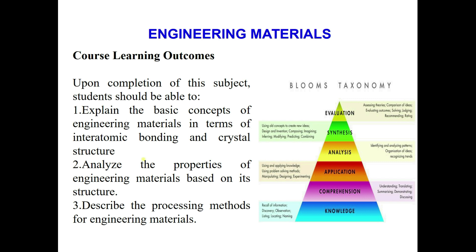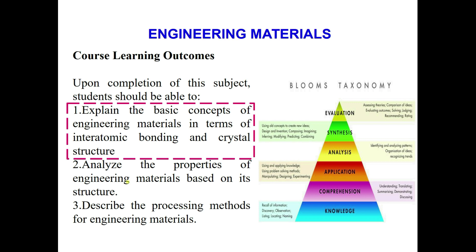What is the purpose of studying the Engineering Materials course? This course has three different CLOs or course learning outcomes. For this particular chapter, the CLO is explaining the basic concept of engineering materials in terms of inter-atomic bonding and crystal structure. Because the word is 'explain,' you need a lower level of thinking based on Bloom's taxonomy, in the range of knowledge and comprehension.